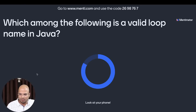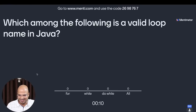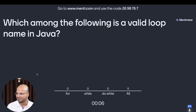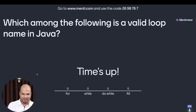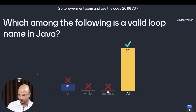The first question: which among the following is a valid loop name in Java? The options are: for loop, while loop, do-while loop, or all. 600 people already voted — closing to 700. Time's up, and the answer is all — everything is valid. In Java we have the for loop, while loop, and do-while loop, so it's 'all' basically.